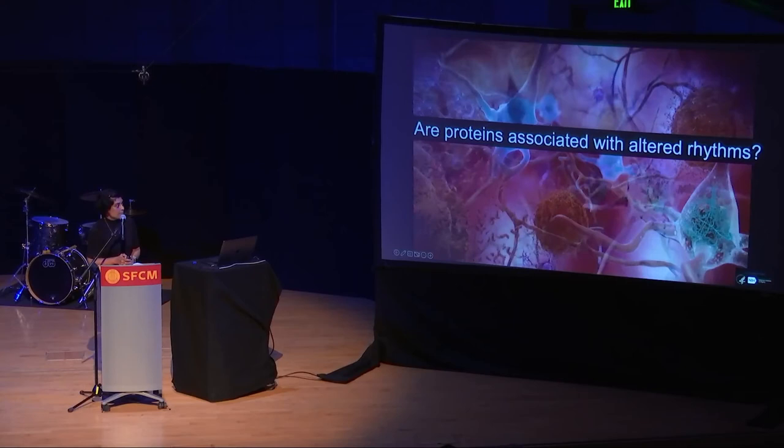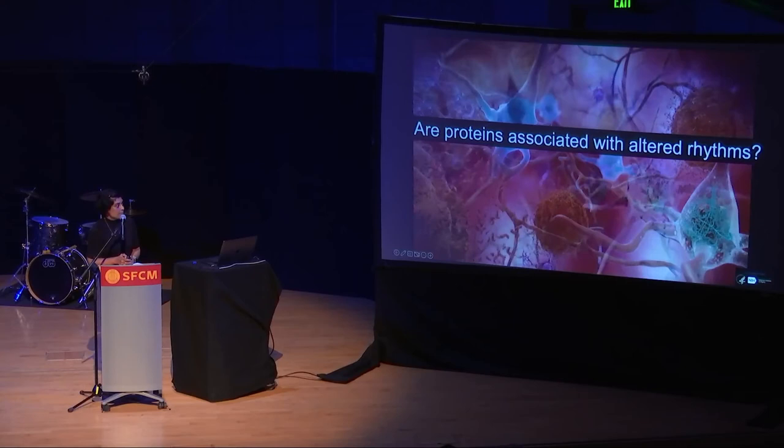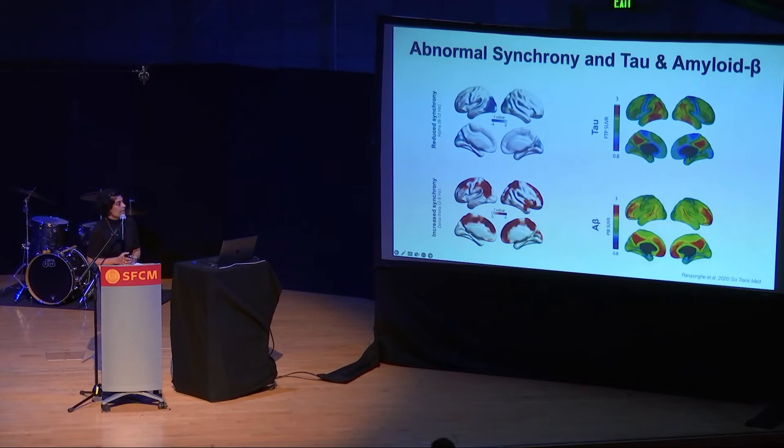So are these proteins associated with altered rhythms? Indeed, that's what we found. We found that the synchrony reductions that happen with this disease are highly associated with tau accumulations, whereas synchrony increases in Alzheimer's disease are tightly coupled with amyloid accumulations.